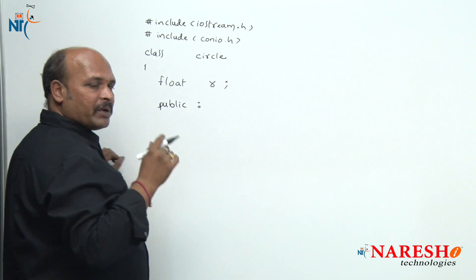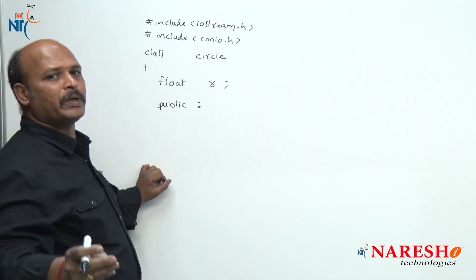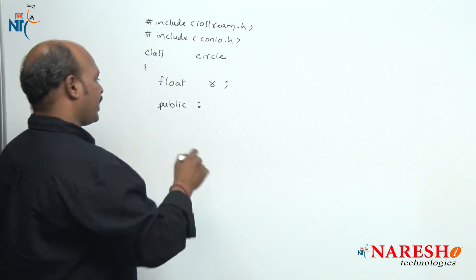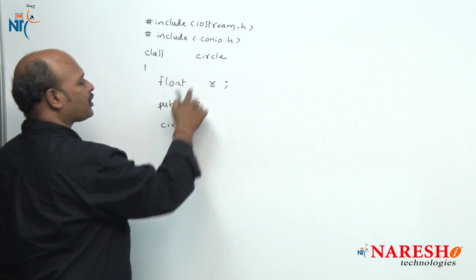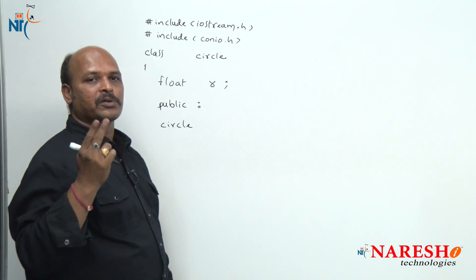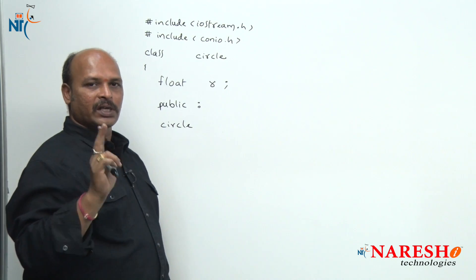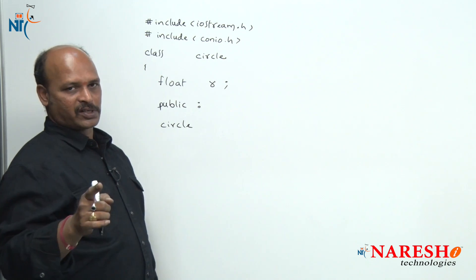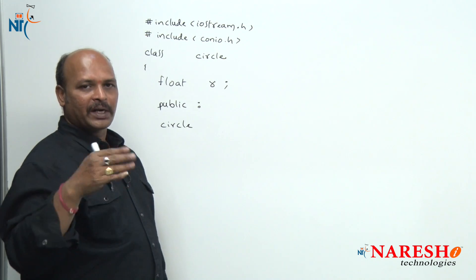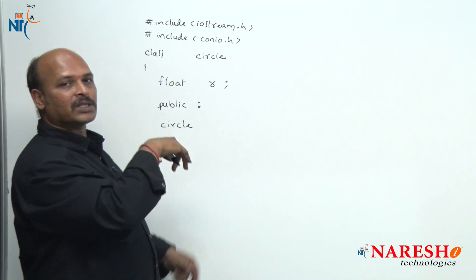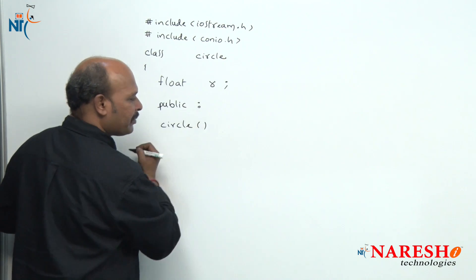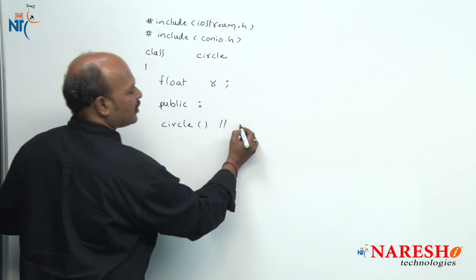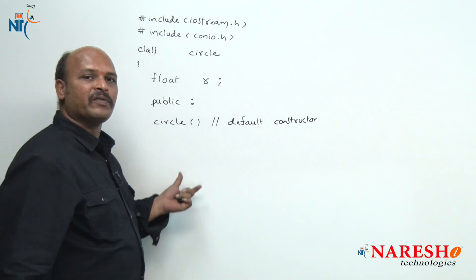The major rule is that the constructor name should match the class name. Our class name is Circle, so our constructor name must also be Circle. We have already discussed two types of constructors: a default constructor and a parameterized constructor. A constructor with empty brackets — no arguments — is called a default constructor.